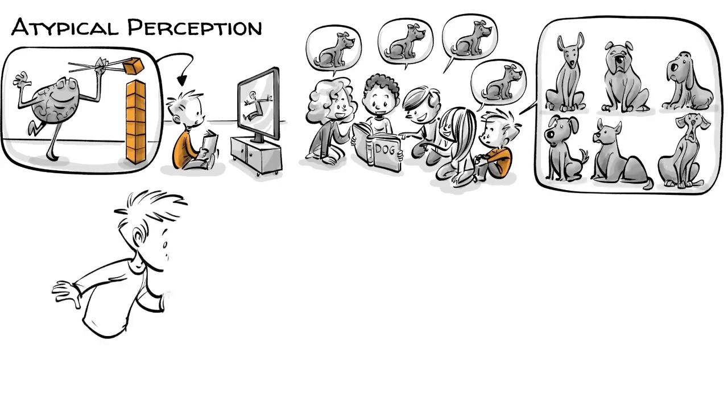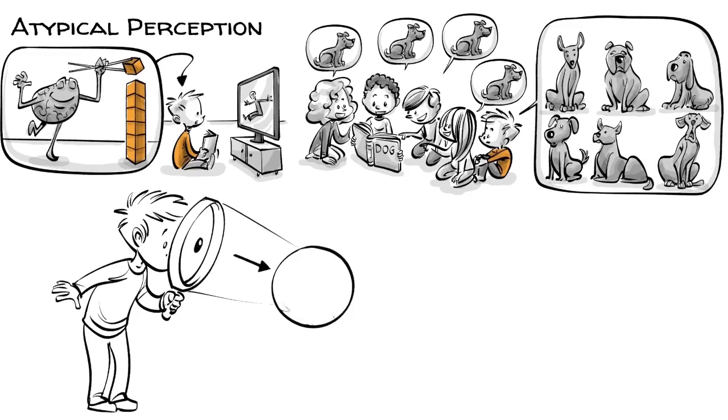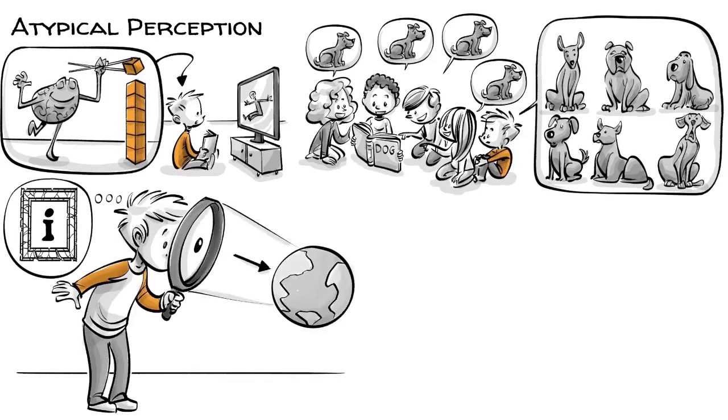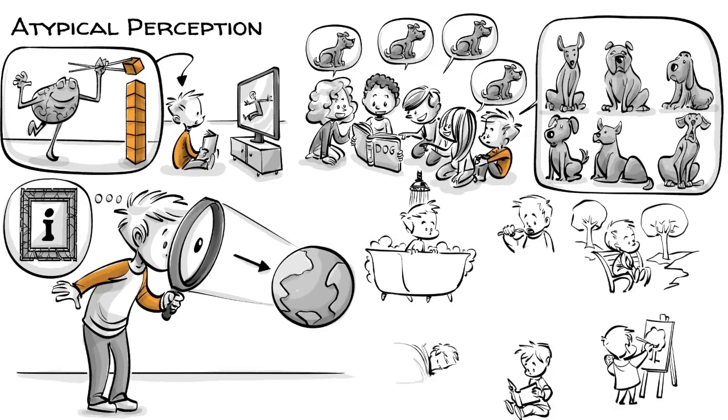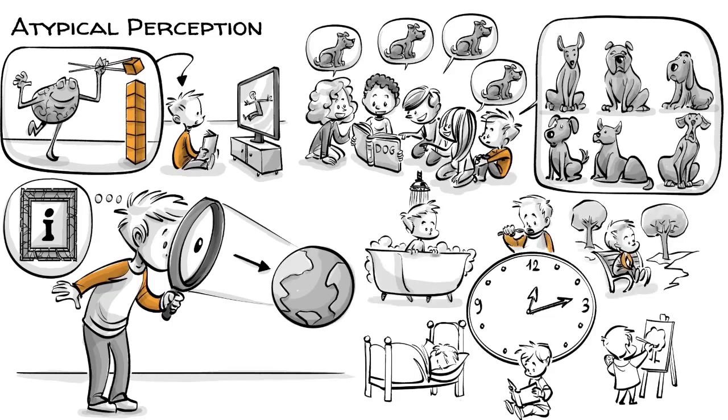His attention to detail and inability to generalize makes Timo more objective in his perception of the world and less prone to a framing bias. However, it also makes all sorts of new experiences incredibly complex, which is why he loves to follow a rigid daily routine to limit his sensory input.